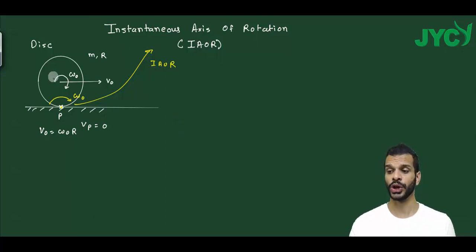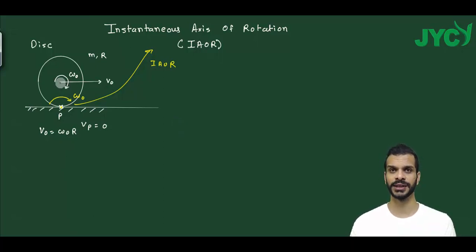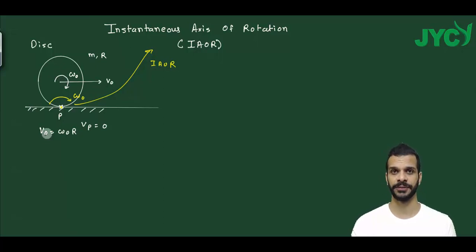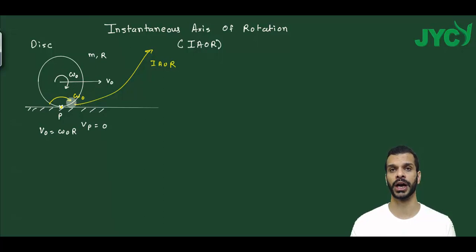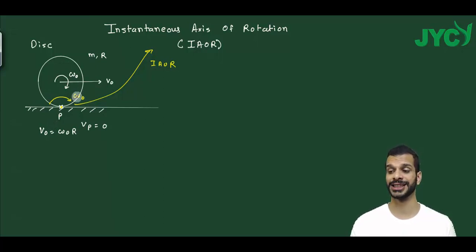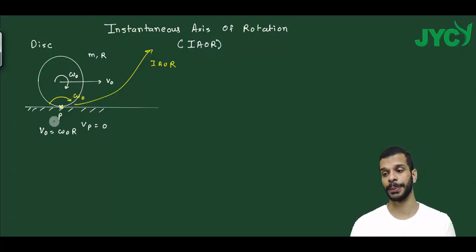Now we have to keep in mind that the angular velocity omega_0 is about the center of mass. But you can also consider the disk rotating about point P with the same angular velocity omega_0. You can verify this.